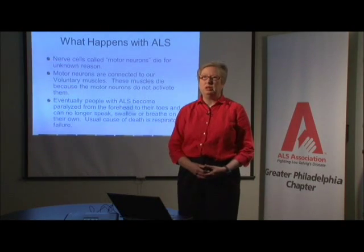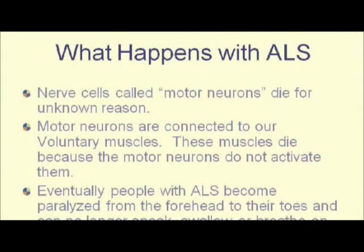So what happens with ALS? Our nervous system starts in our brain and goes into the spine, and then we have all these nerves that shoot out from the spine. Some of these nerves are called motor nerves or motor neurons. The motor nerves are connected to the voluntary muscles, and it's the nerve's job to stimulate the muscle. So if there's no stimulation of the muscle, the muscle would weaken and eventually atrophy or waste.